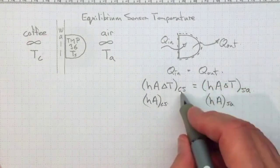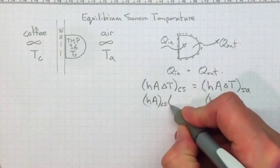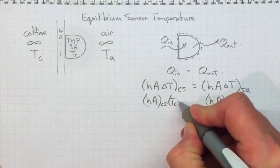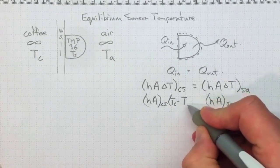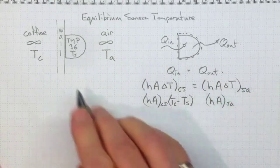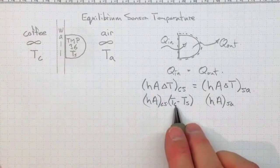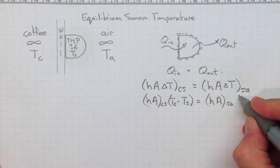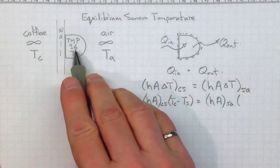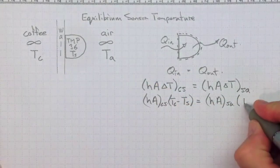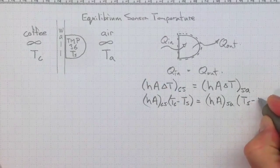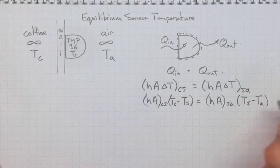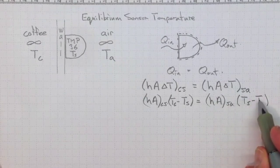The delta T, well for the CS, it's going to be T_coffee minus T_sensor. So there will be a positive heat transfer to the sensor if the coffee is hotter than the sensor. And on the other side, the delta T will be T_sensor minus T_air. So if the sensor is hotter than the air, there's going to be energy transferred from the sensor to the air.